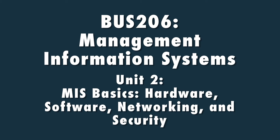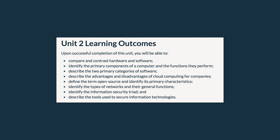Now that we understand the foundations of Management Information Systems, we are ready to move into Unit 2. In Unit 2, we will dive deeper into hardware, compare and contrast hardware and software, identify the primary components of a computer, describe the advantages and disadvantages of cloud computing, identify various network types, identify the information security triad, and describe some of the tools used to secure information technologies.